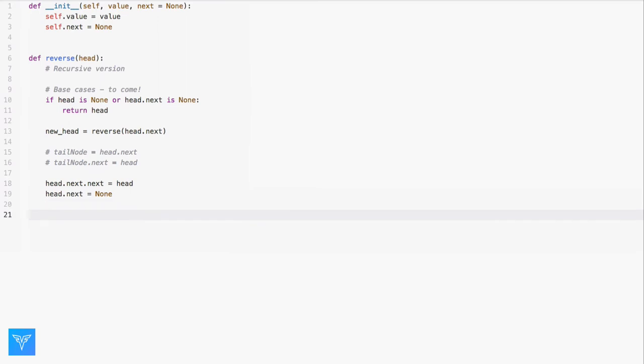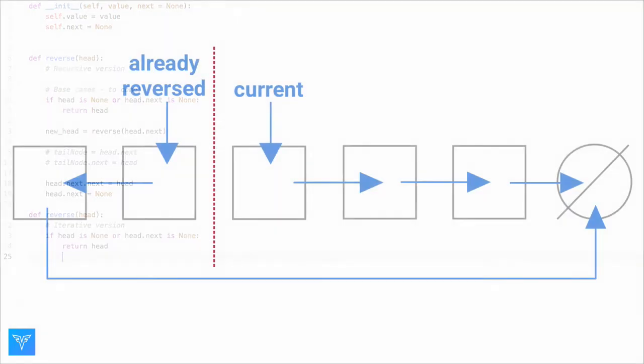An iterative approach to this problem doesn't have these limitations and executes just as fast as the recursive approach. As before, if the list only has zero or one elements in it, reversing it doesn't change anything, so we can just return the original head. The iterative approach works by reversing the list one node at a time, starting at the original head node.